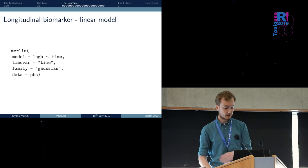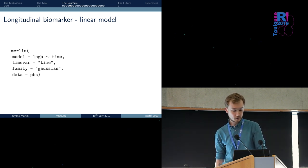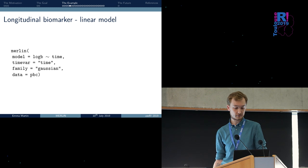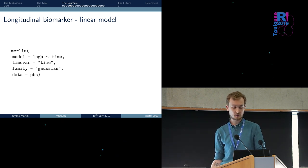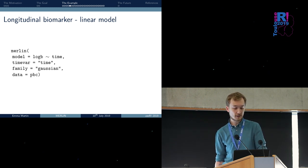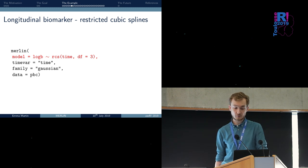We can start with Merlin, and to begin with, we can fit just a simple linear model. It's really straightforward. We just call Merlin. We define the model. We define time var. In this case, it's not necessary, but later on, we'll see that we have to define what is the variable that represents time. We define the family. We choose Gaussian as we assume it's a linear model for continuous outcome. Then we define which dataset we're using.